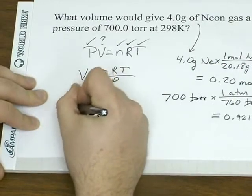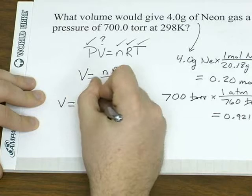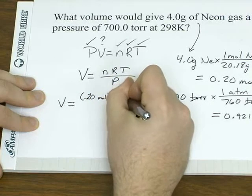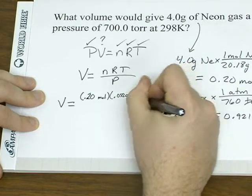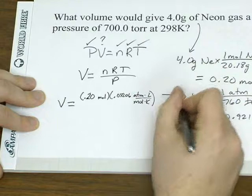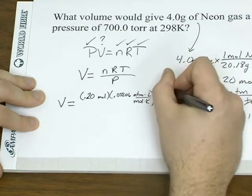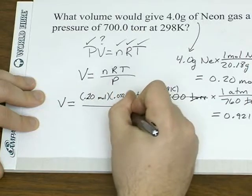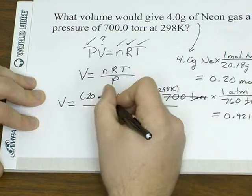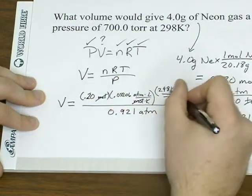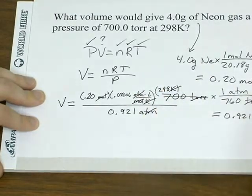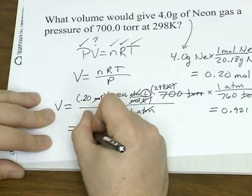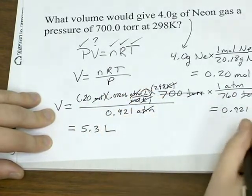Now we plug everything into our equation. V equals n times R times T over P. You see the mole unit drops out, kelvin drops out, atmosphere drops out. The only unit left is volume, which is what you're looking for. Plug that into your calculator and you get 5.3 liters.